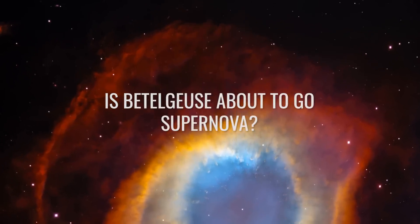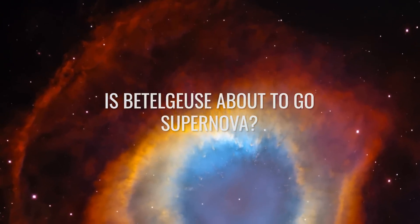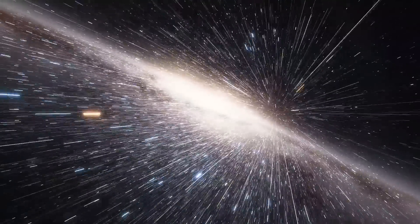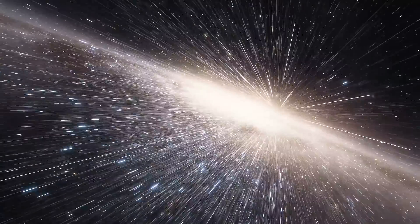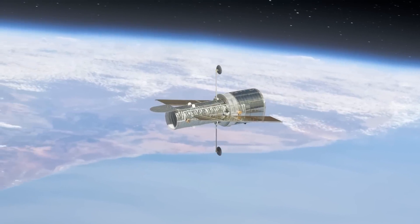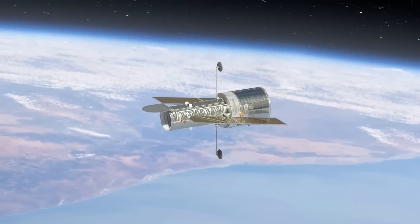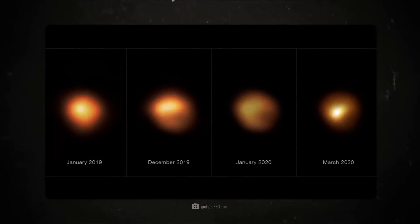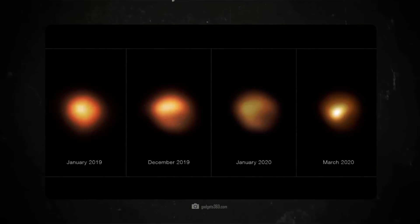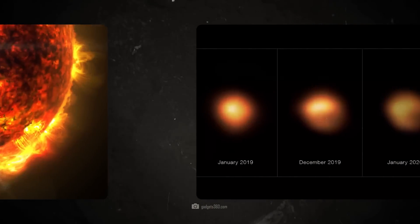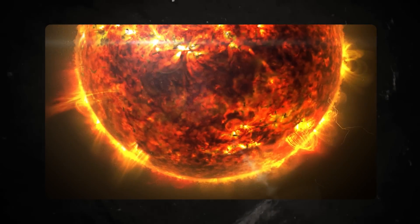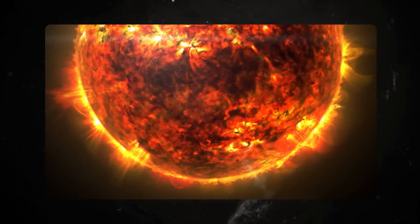Is Betelgeuse about to go supernova? Back then, in October 2019, the experts documented a strange process that ultimately led to a dramatic reduction in brightness. In February 2020, this was no longer even 40% of its average initial value. What's more, Betelgeuse has never been so dim since astronomical studies began.